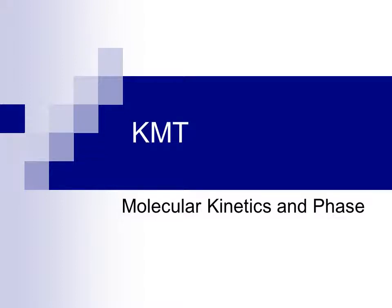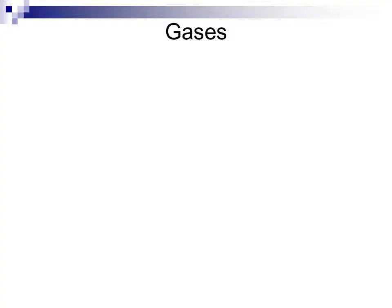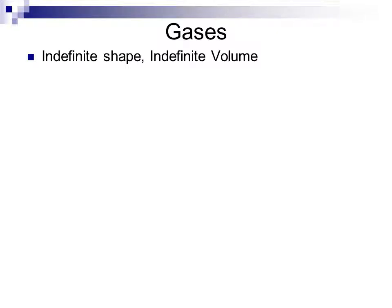Kinetic molecular theory, or KMT, looks at molecular kinetics and how it influences phase. Gases are the primary phase which we analyze when looking at the behavior of substances in kinetic terms. We know that a gas, by definition, is something which has an indefinite shape and volume.